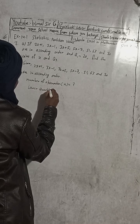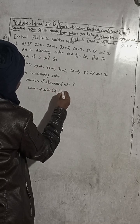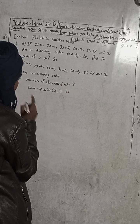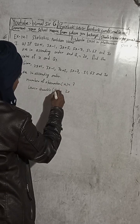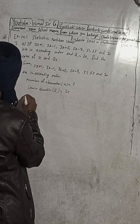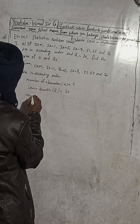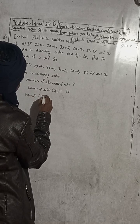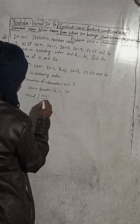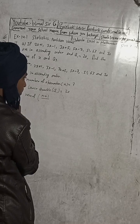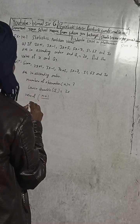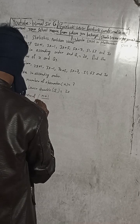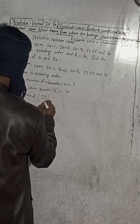The lower quartile Q1 is equal to 20. The formula for the lower quartile Q1 is the value of the (n+1)/4 th term.